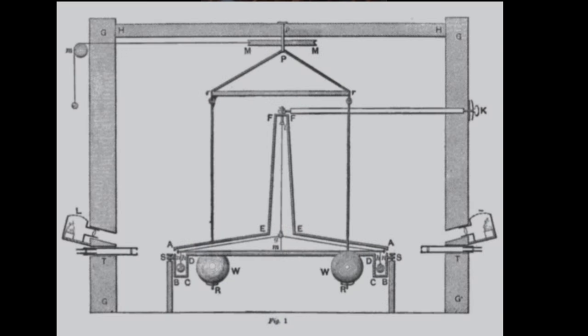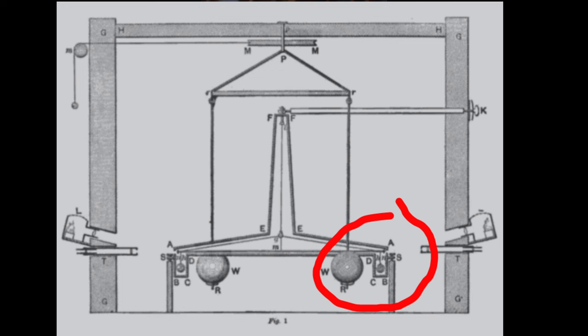According to the Cavendish experiment — which is a well-known, foundational experiment done to demonstrate the gravitational constant G — a horizontal balance is set up with a couple of masses that interact gravitationally, causing the balance to rotate horizontally. A force is observed, an attractive force between the two masses. In the classic Cavendish experiment, those were lead spheres: one stationary sphere and one smaller sphere mounted on the end of a balance beam.